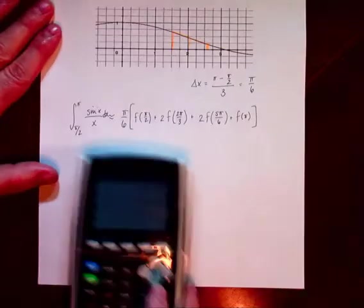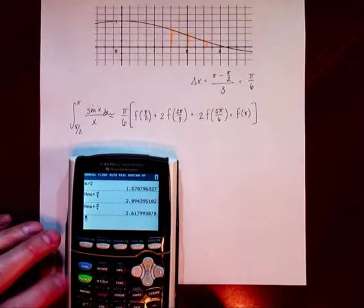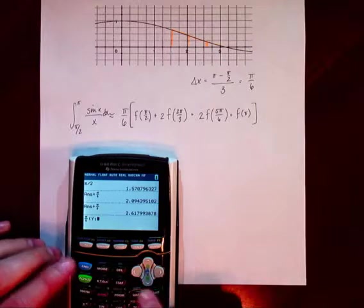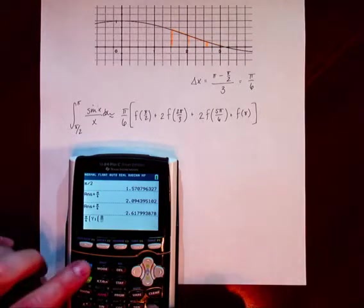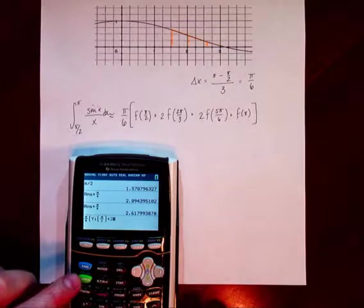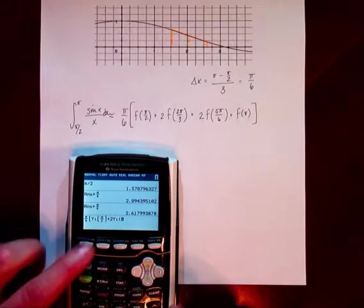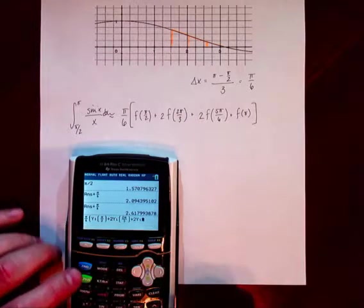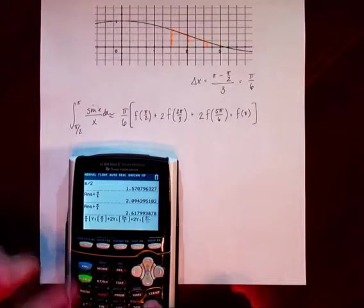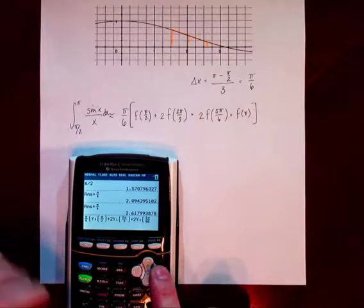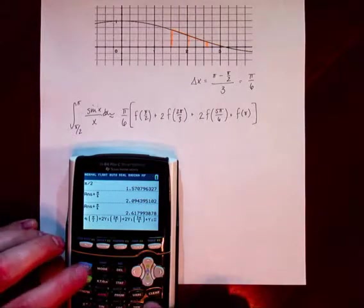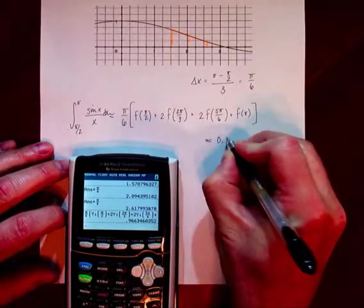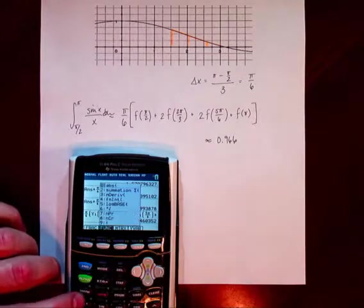Let's plug in. We'll start with our delta x, open parentheses, and we need y1 of π/2, plus 2 times y1 of 2π/3, plus 2 times y1 of 5π/6, plus y1 of π, then close parentheses. Our approximation comes out to 0.966. Let's see how good that approximation is.